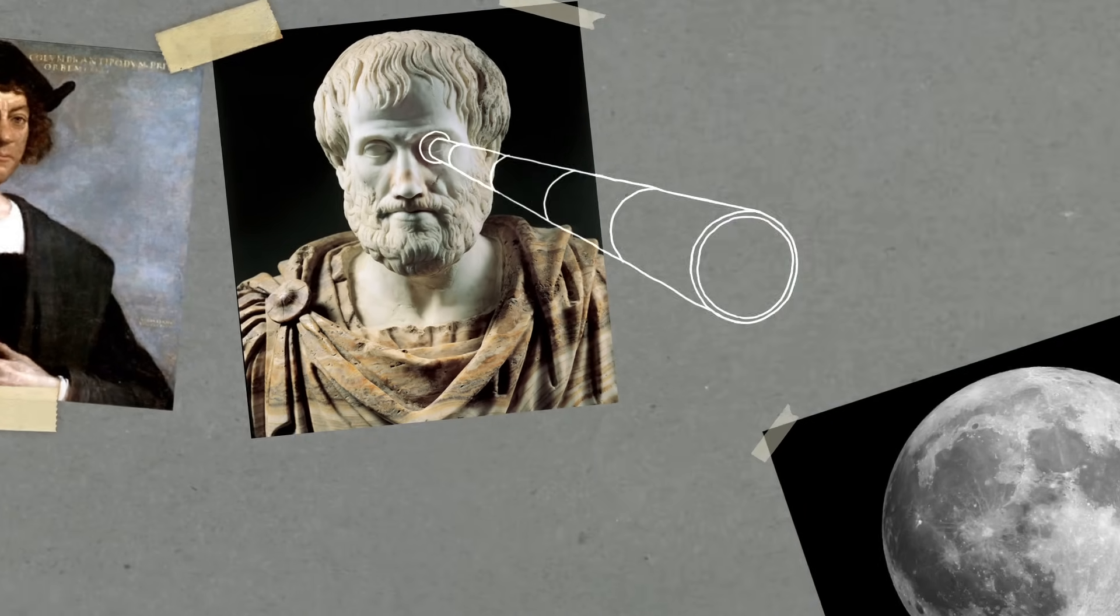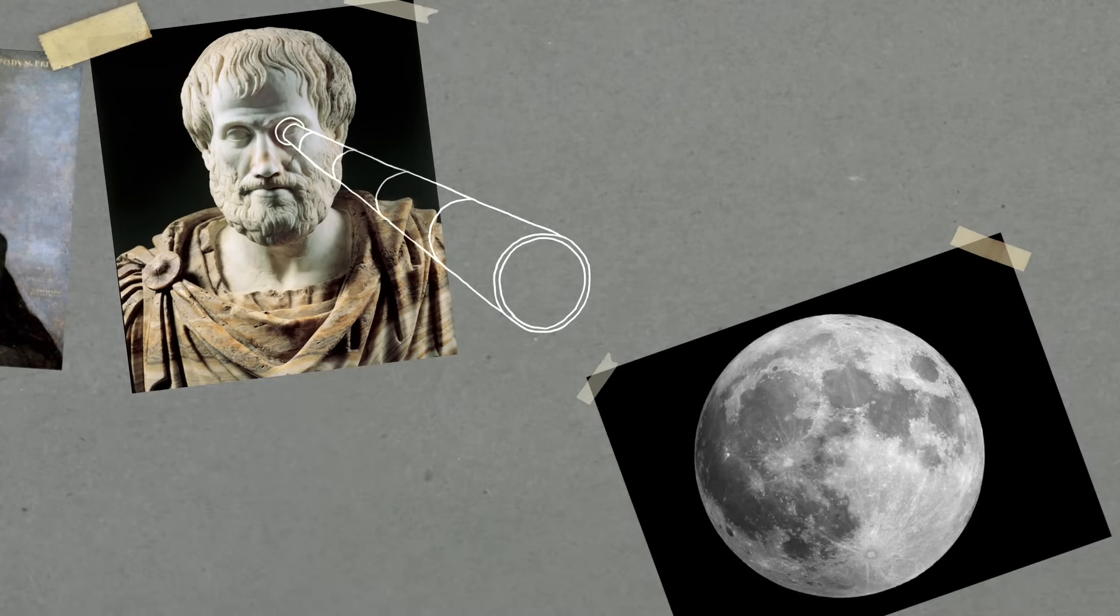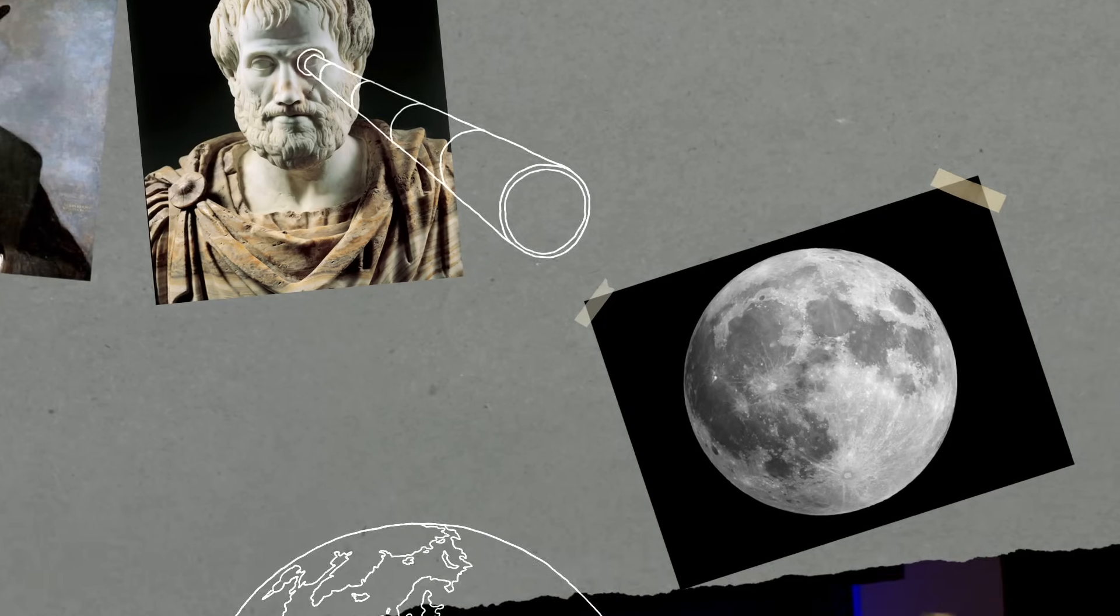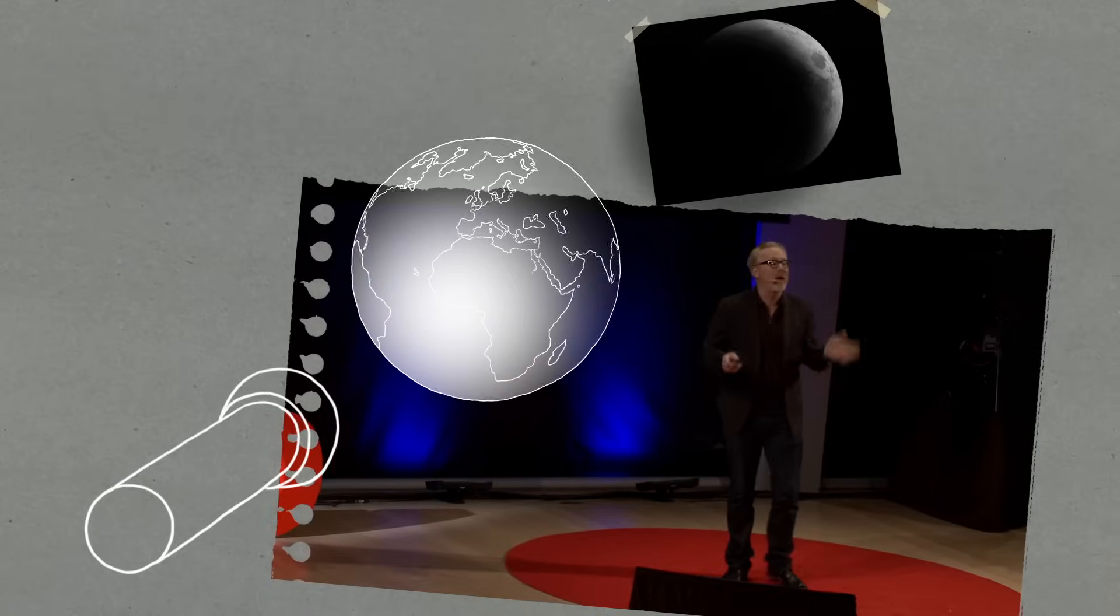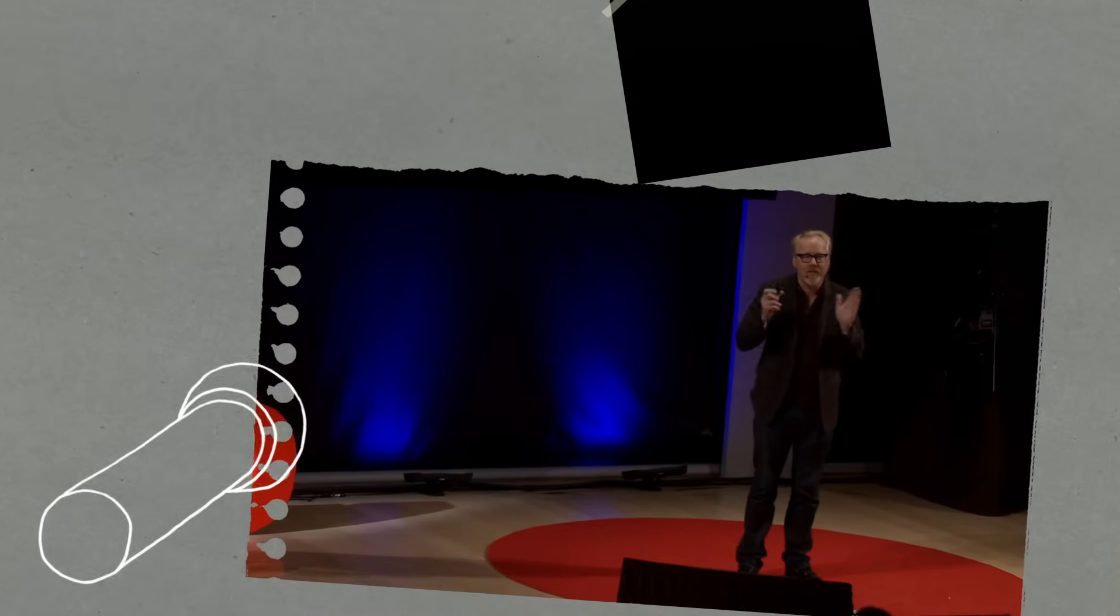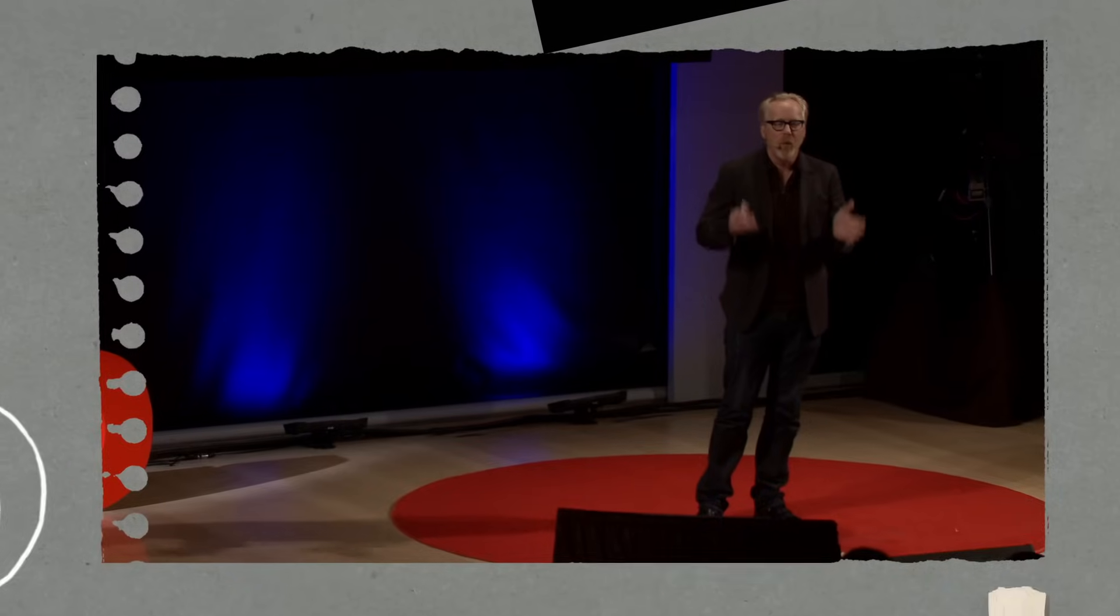Aristotle had proved it with a simple observation. He noticed that every time you saw the Earth's shadow on the moon, it was circular. And the only shape that constantly creates a circular shadow is a sphere. Q-E-D, the Earth is round. But nobody knew how big it was until Eratosthenes got this letter with this fact.